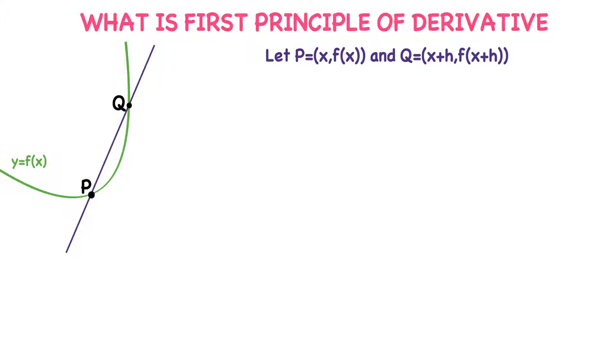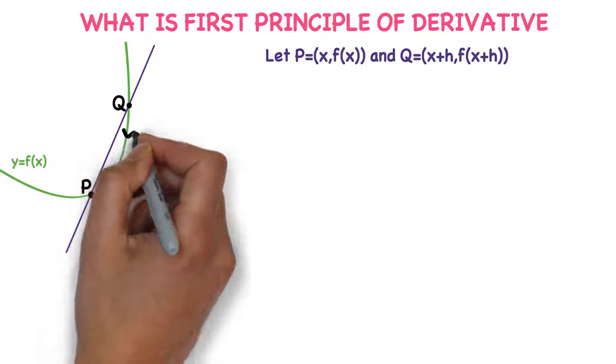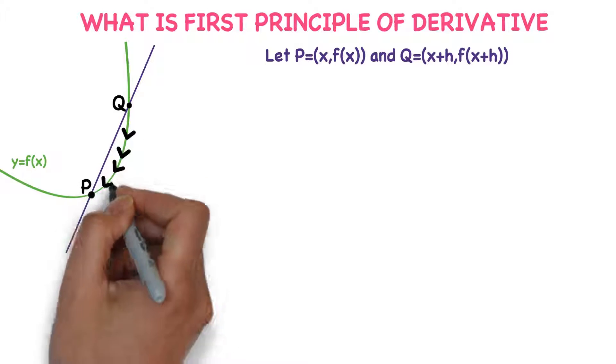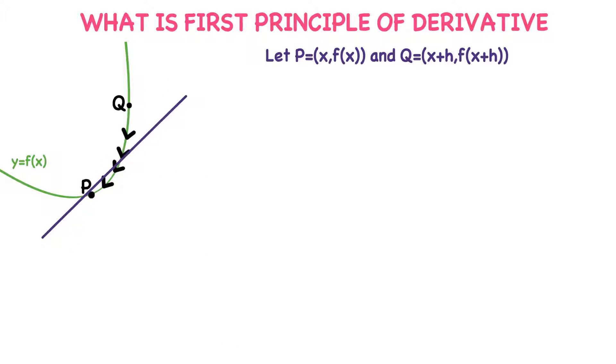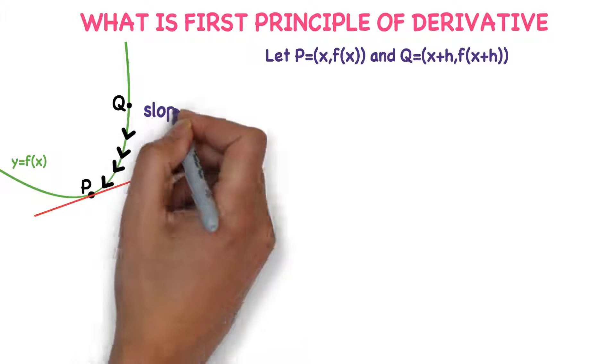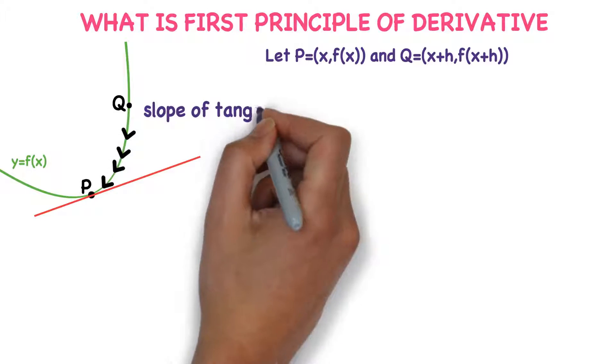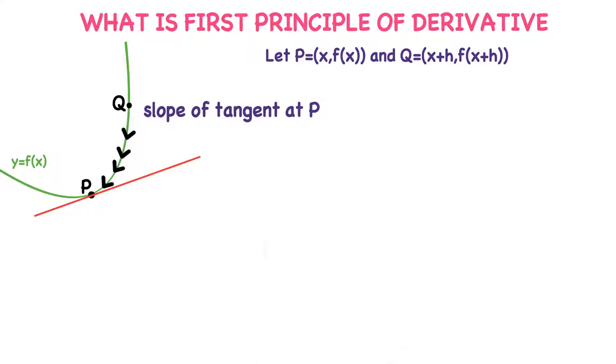Now observe that as Q approaches P from the right, the secant line becomes tangent at point P. The slope of tangent at point P is the limiting position of the slope of secant line PQ.